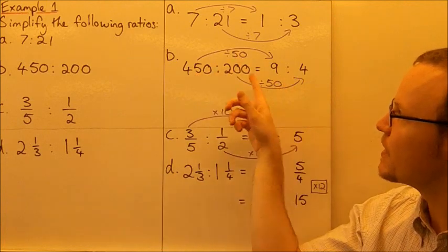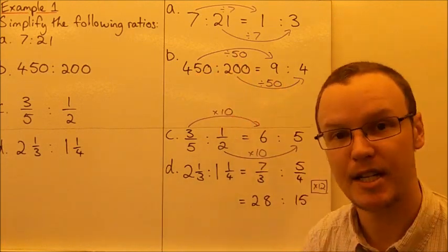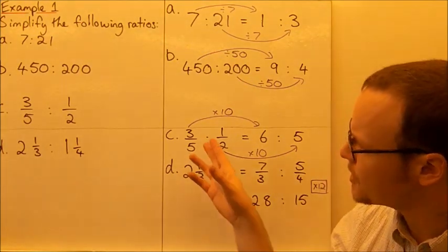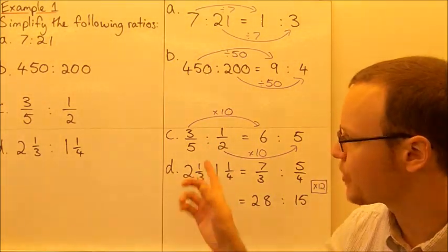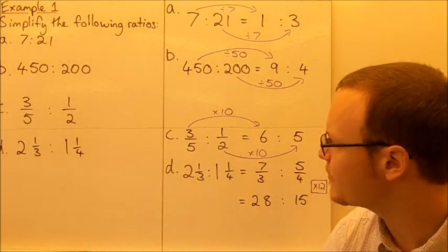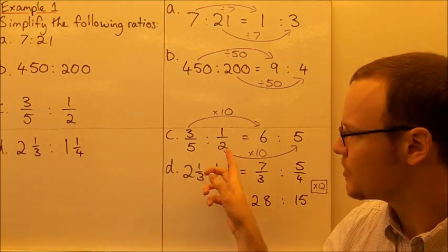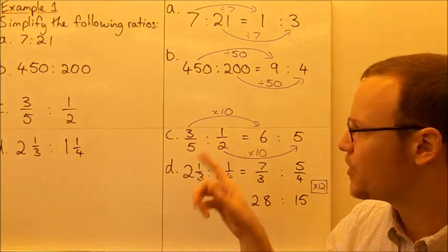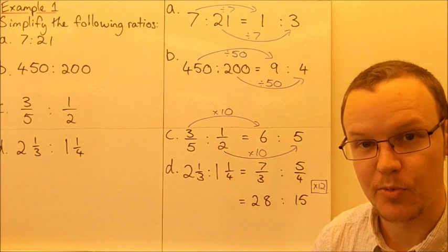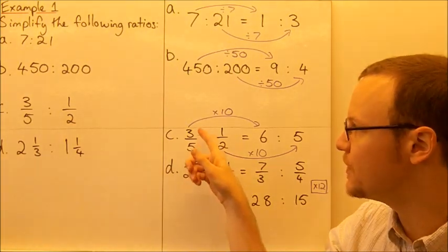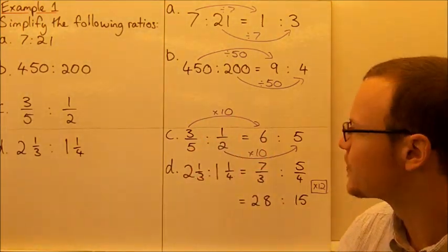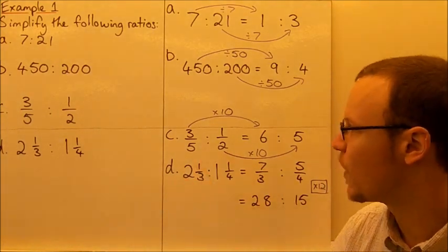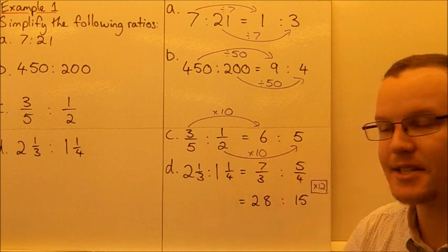We've divided by 50 for each — it's an equivalent ratio because we've divided them both by the same number. Now we've got a ratio with fractions: three-fifths to one-half. The lowest common denominator between three-fifths and one-half is 10, so if we multiply both of those numbers by 10 we'll remove the fractions. Three-fifths multiplied by 10 is 6, and one-half multiplied by 10 is 5. So the equivalent ratio for this one is 6 to 5.